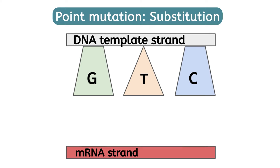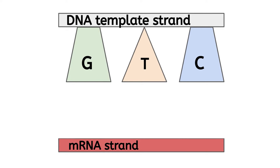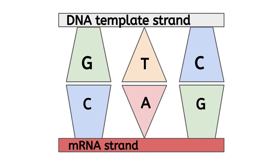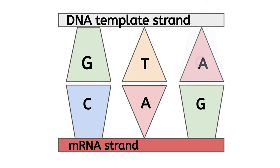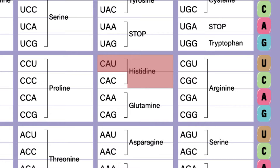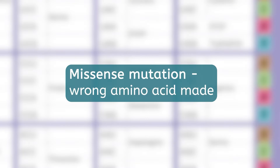Unfortunately, not all mutations are silent. Our original DNA codon reads GTC, which gets transcribed into an mRNA codon of CAG. This codes for the amino acid glutamine in translation. This time, the mutation made during DNA replication changes our original DNA codon to GTA instead of GTC. This will transcribe to CAU and translate to the amino acid histidine. Yikes, that's not what we meant to make at all. When the mutation causes a different amino acid than the original to be made, it is called a missense mutation.